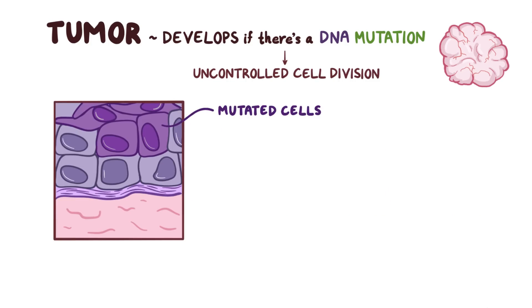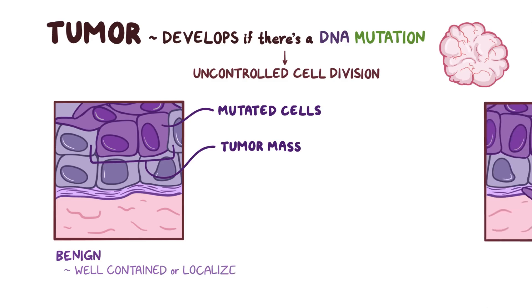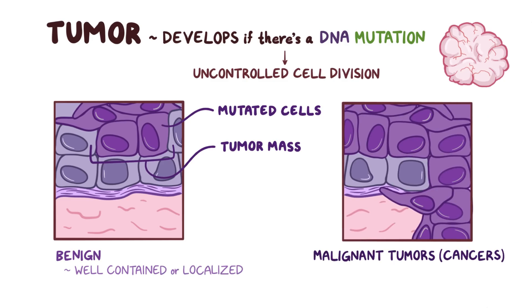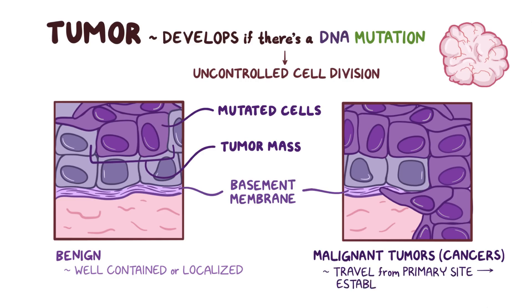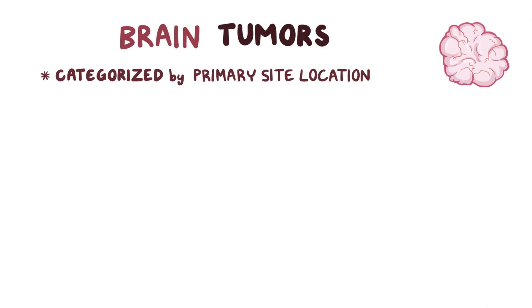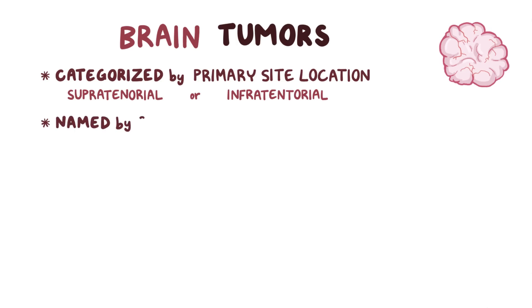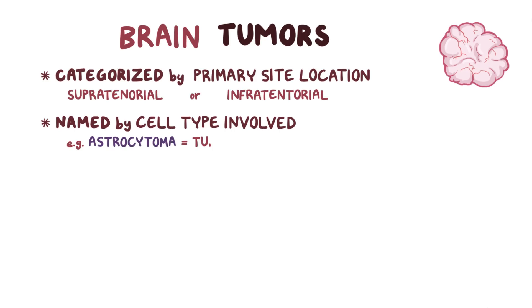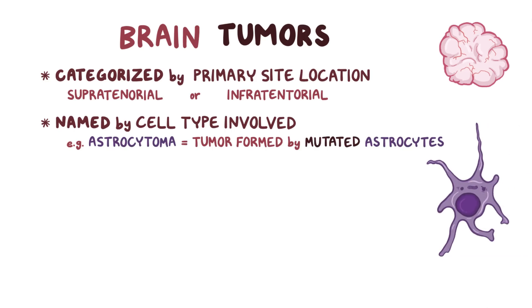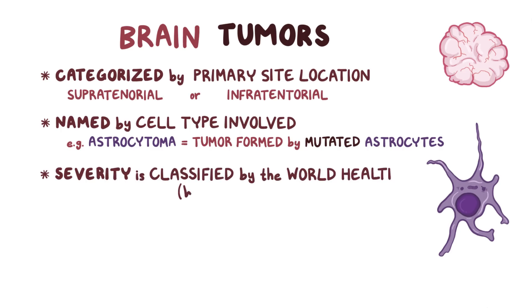As a result, the mutated cells can start piling up and become a tumor mass. Some of these tumors are benign and stay well contained or localized, but some become malignant tumors or cancers — those that break through their basement membrane and invade nearby tissues. Malignant tumor cells can get into nearby blood or lymph vessels and travel from the primary site to establish a secondary site of tumor growth somewhere else in the body — that's called metastasis. Brain tumors can be categorized by their primary site location as either supratentorial or infratentorial, and are typically named by the cell type involved. Their severity is classified, or graded, by the World Health Organization's scale.